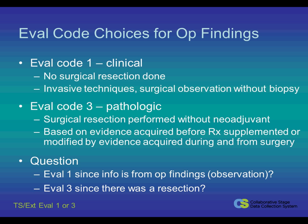So the question is: should we use eval code 1 since the information is from the operative findings — the observation — or should we use eval code 3 since there was a resection and it says to use evidence acquired during surgery?